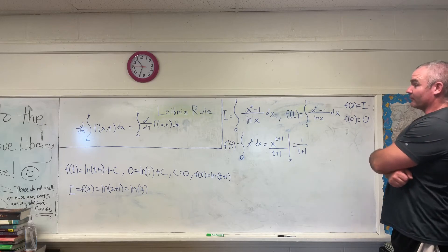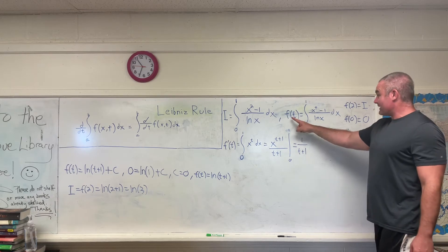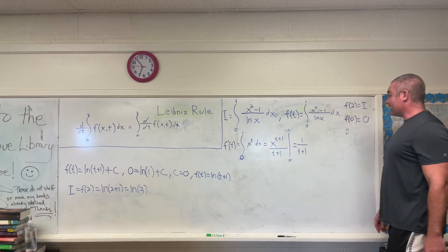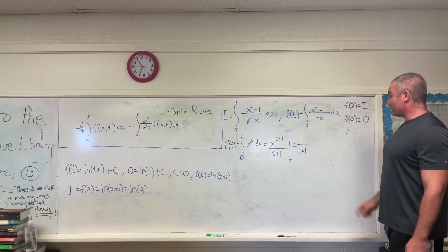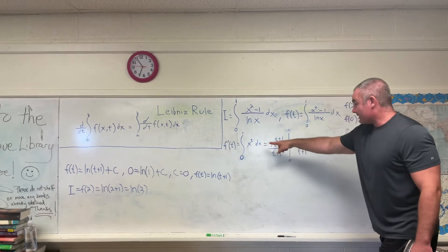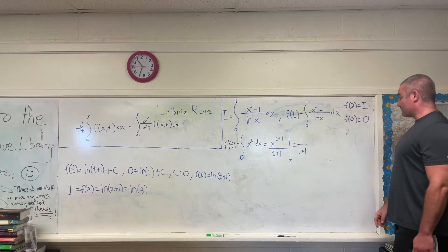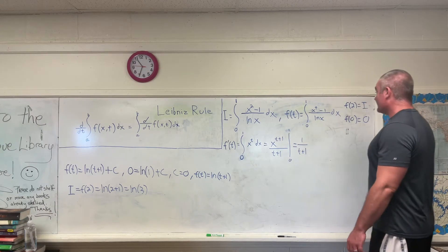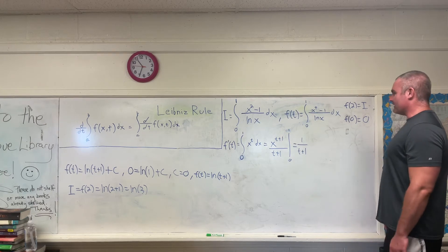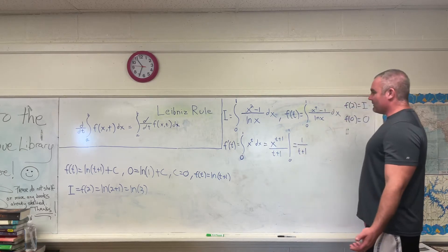So the next step is using the Leibniz rule for differentiation under the integral sign. We can actually take the derivative with respect to t of this function of t directly by taking the partial derivative with respect to t of the inner function. As you can see, that's the next step right there. If you take the partial derivative of x to the t minus 1 all over natural log x, you will get x to the t.